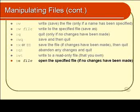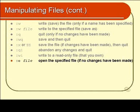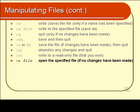Colon e space file means open another file — e for edit. It will only allow you to do that if you have not made any changes. If you have made some changes, use colon w to save them before you open the next file. This is quite important: in Vi you can only be editing one file at a time. You can't have two different files open both with unsaved changes. You can only do one of those at a time.